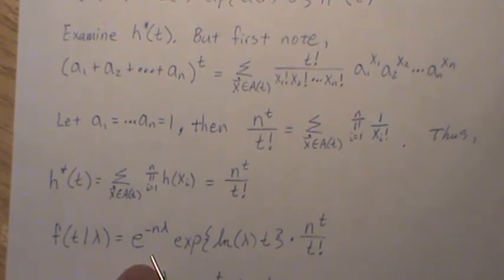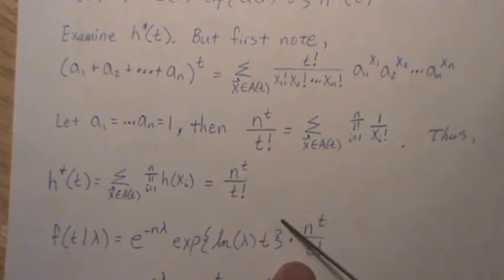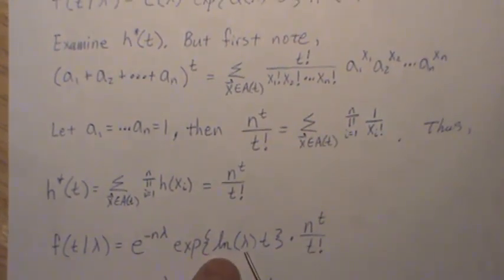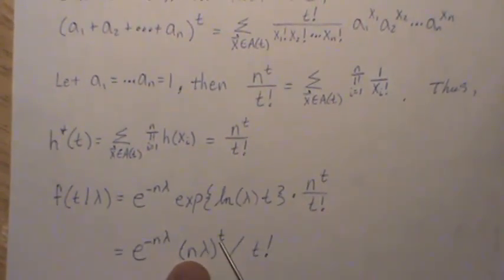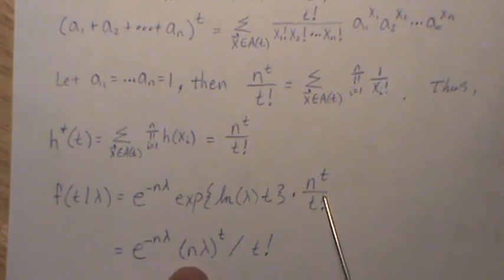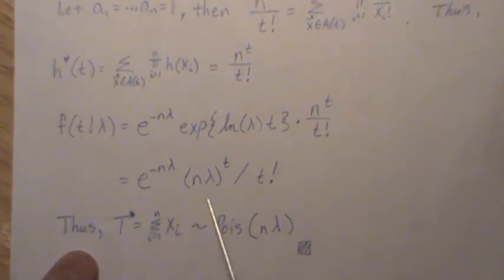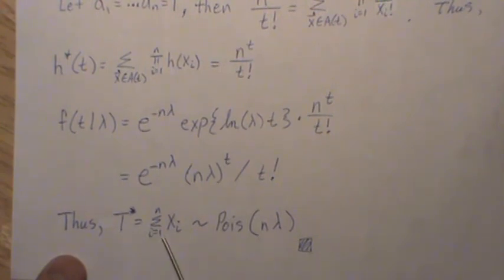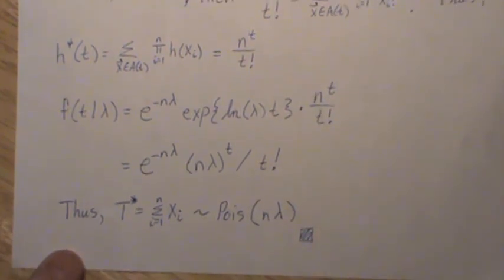So f(t) is c(lambda) to the nth power, times e to the q(lambda) times t, times h*(t). Plugging in, this is e to the minus lambda to the nth power, times e to log(lambda) times t, times n to the t over t factorial. Note that e to the log(lambda) times t becomes lambda to the t, and lambda to the t times n to the t can be combined into n*lambda to the t. This leaves e to the minus n*lambda times n*lambda to the t divided by t factorial — which is the Poisson(n*lambda) density. Thus t star, the sum of the xi's, is Poisson with parameter n*lambda, which is exactly what we know and confirms the theorem.